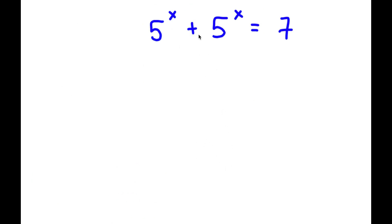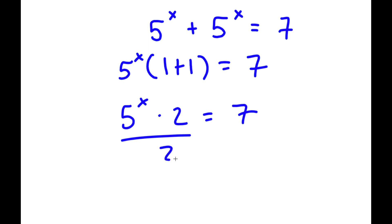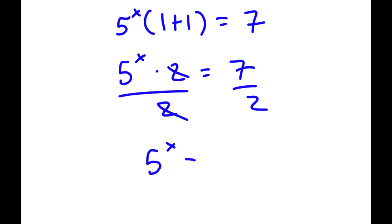So in this problem, I have 5 to the power of x plus 5 to the power of x is equal to 7. The first thing I'm going to do is factor out 5 to the power of x from my left-hand side. So I have 5 to the power of x times (1 plus 1) equals 7. 1 plus 1 is 2, so I have 5 to the power of x times 2 equals 7. Now I divide both sides by 2, so I get 5 to the power of x equals 7 over 2.